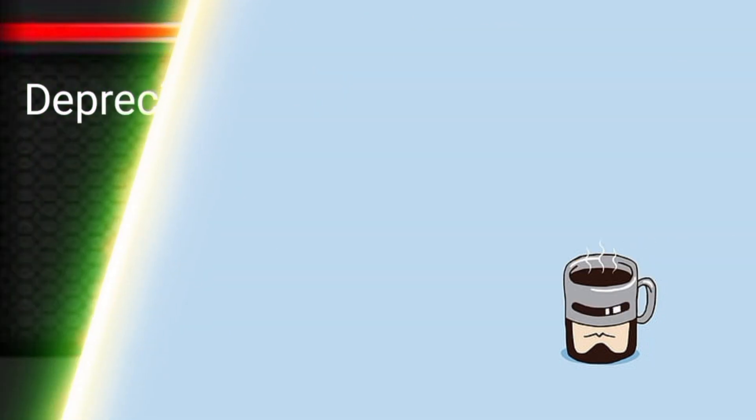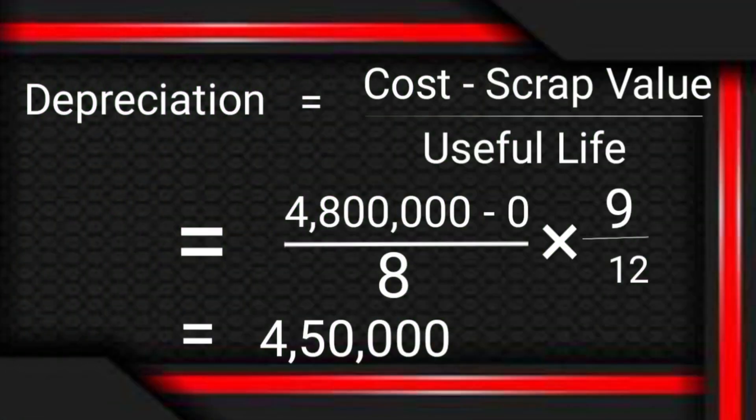So first of all, let's start the depreciation formula. It's called cost minus scrap value over useful life. So here we have 4.8 million as the cost. For scrap value, it's nil. And for useful life, it's 8 years. This depreciation formula gives us the 1-year depreciation.